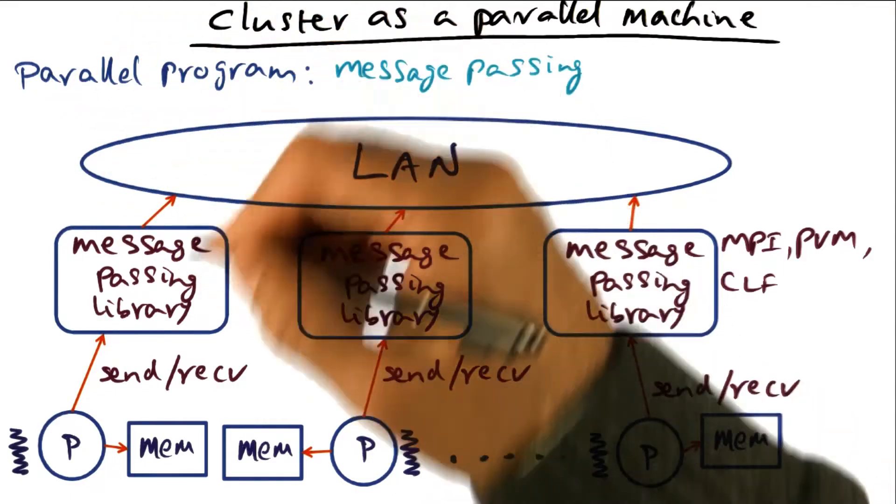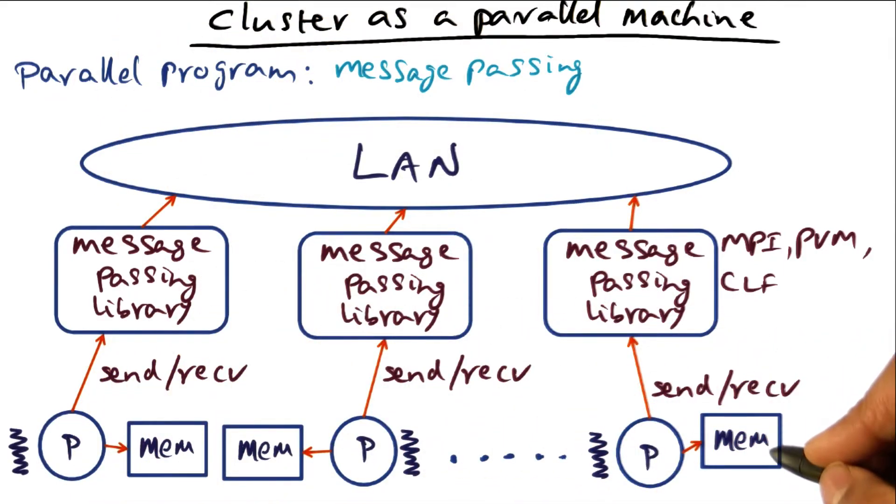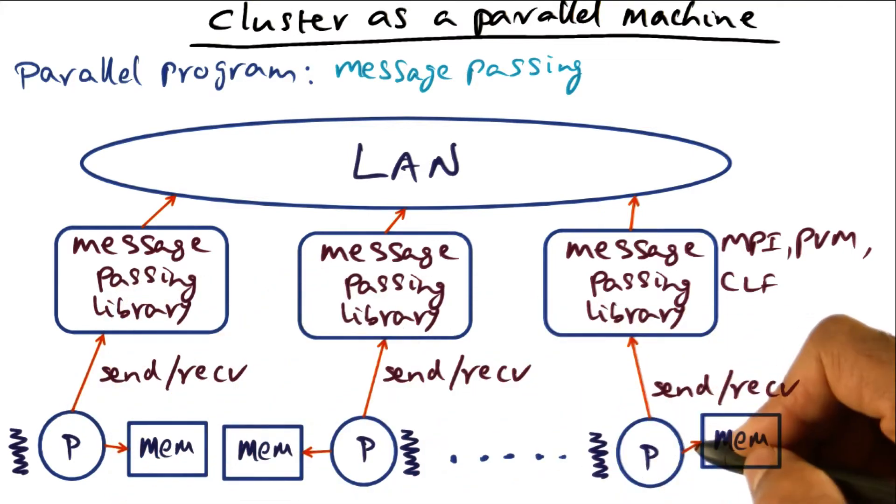So we write the program as a truly parallel program. In other words, the application programmer is going to think about his application and write the program as an explicitly parallel program.